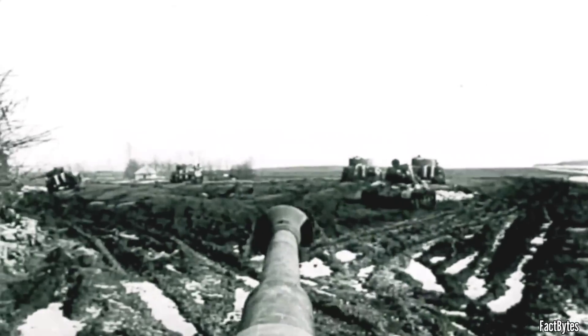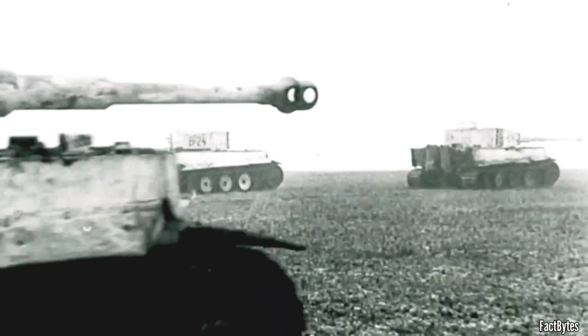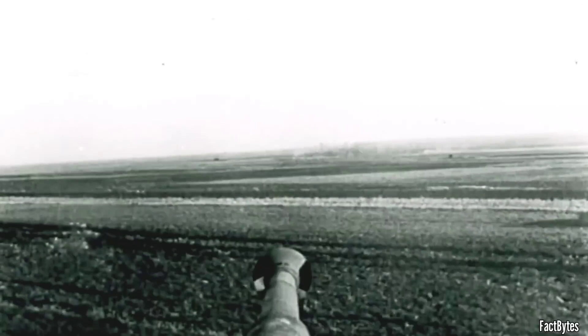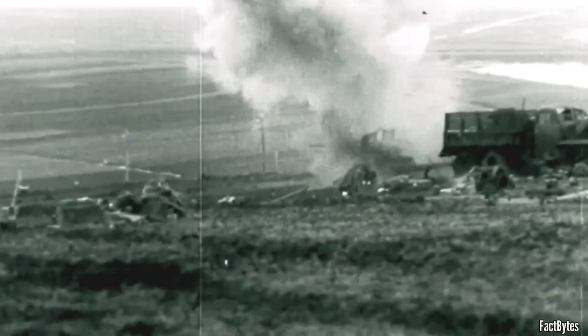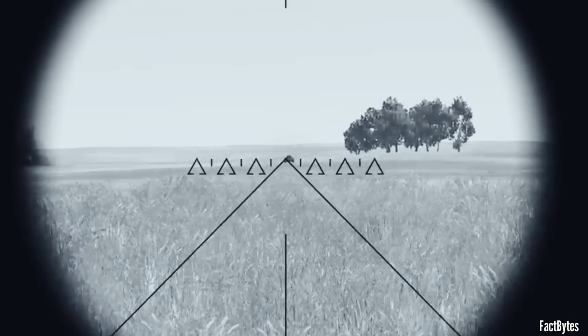After determining the range, the final step was to dial the range to adjust the superelevation. Superelevation involves raising the barrel of the main gun to a firing angle higher than the direct line of sight to the target. This compensates for gravitational effects, ensuring the projectile reaches the target accurately. The amount of superelevation needed depends on factors such as the muzzle velocity and ballistic coefficient of the projectile. Higher muzzle velocity requires less superelevation. However, regardless of the range, the aiming point always remains the tip of the large triangle.